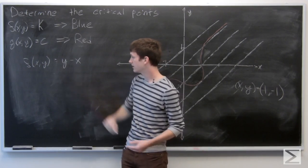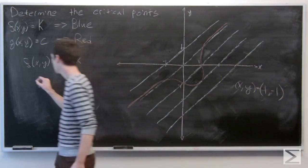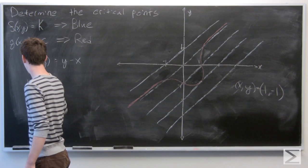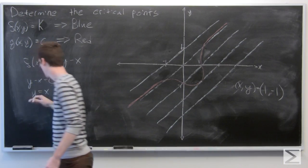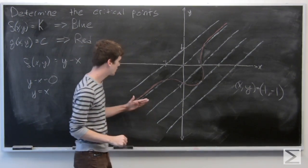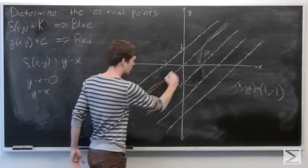And when we set this equation equal to, for instance, 0, we have y is equal to x. So then we're given this level curve here.